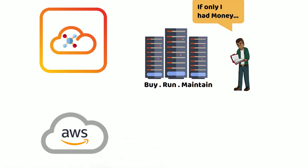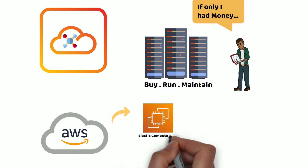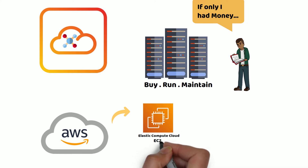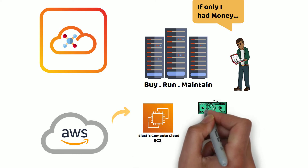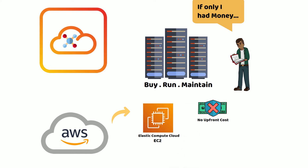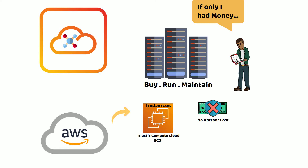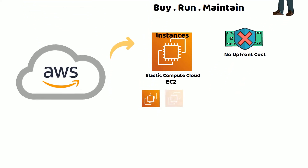AWS cloud addresses this limitation by providing a computing platform named Elastic Compute Cloud, or EC2, that eliminates the need to invest upfront in hardware, allowing you to develop and deploy applications in minutes. Virtual computing environments provided by the EC2 service are known as instances.